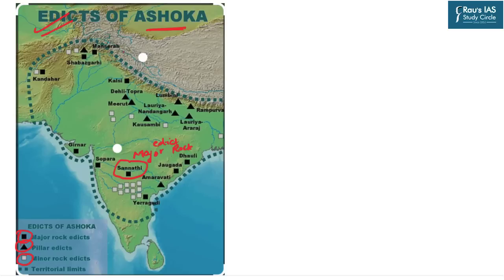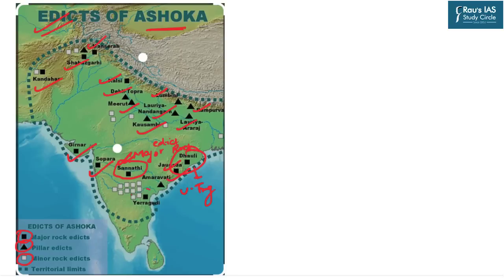All important edicts of Ashoka should be learned. Starting from the north: Maneshar, Shahbazgadi, Kandhar, Kalsi, Delhi-Topara, Merat, Lumbini, Loria Nandangar, Rampurva, Loria Araraj, Koshambi, Girnar, Sopara, Sanati, Amravati, Jogada, Dhali, and Yeraguti. These are important from the Prelims perspective as questions may directly ask about the locations of these specific sites.